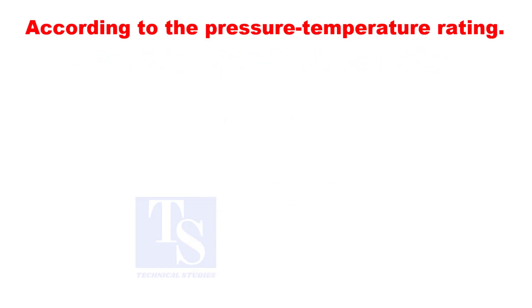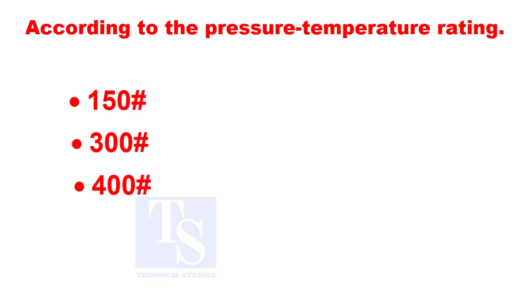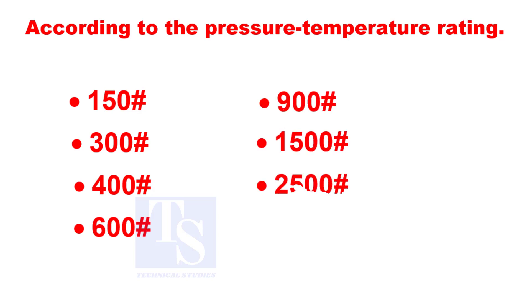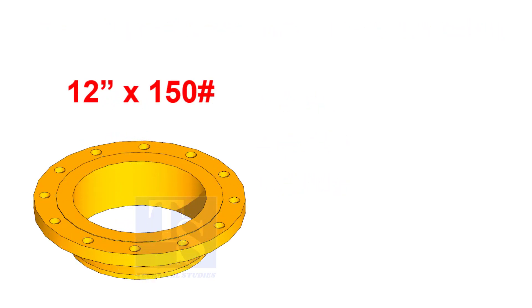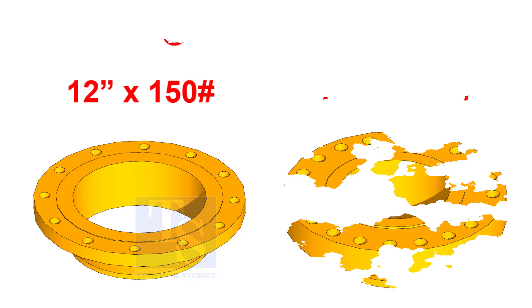Based on pressure temperature rating, flanges are of the following types: 150 lbs, 300 lbs, 400 lbs, 600 lbs, 900 lbs, 1,500 lbs, and 2,500 lbs. As the pressure rating of a flange increases, the flange dimensions, strength, and load carrying capacity also increases. Compare these flanges.